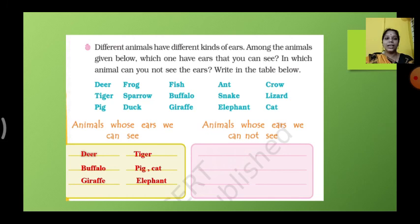We will see what is that. So deer, tiger, buffalo, pig, cat, giraffe and elephant we can see the ears. Which we can't see: frog, fish, sparrow, duck, ant, crow, snake and lizard. We can't see the ears, right?